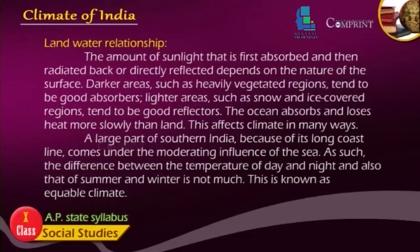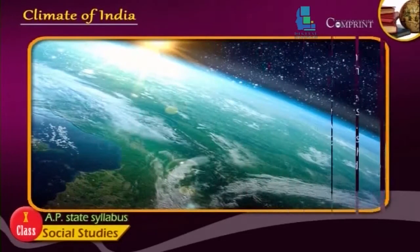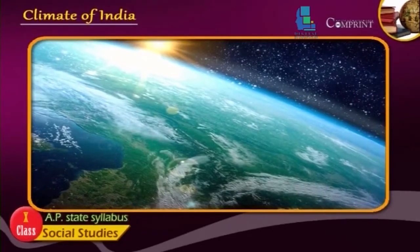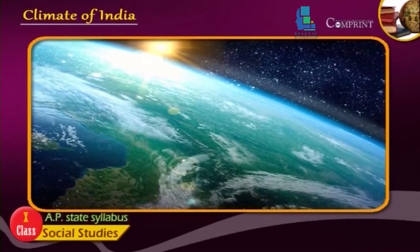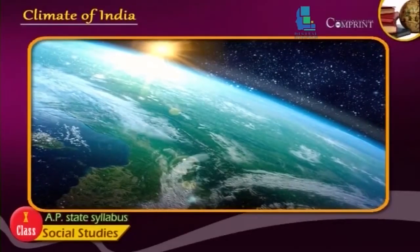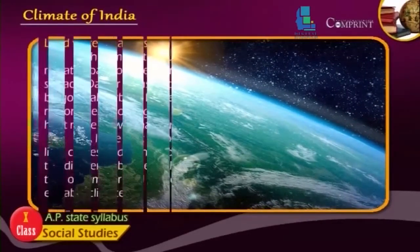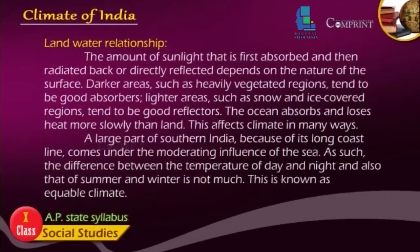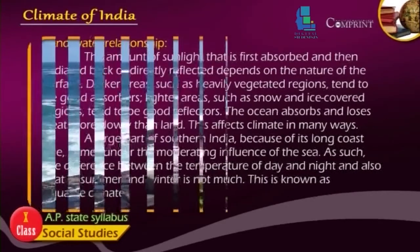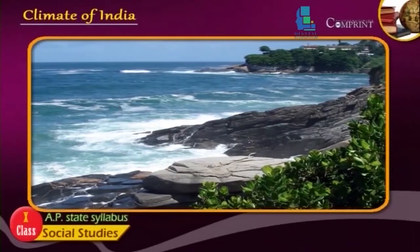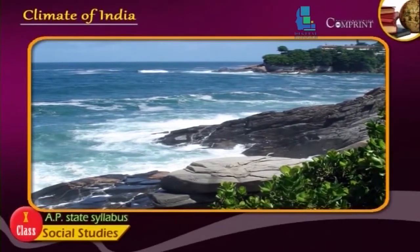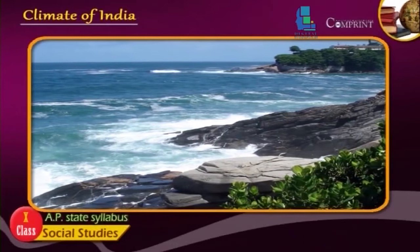The amount of sunlight that is first absorbed and then radiated back or directly reflected depends on the nature of the surface. Darker areas such as heavily vegetated regions tend to be good absorbers. Lighter areas such as snow and ice-covered regions tend to be good reflectors. The ocean absorbs and loses heat more slowly than land.